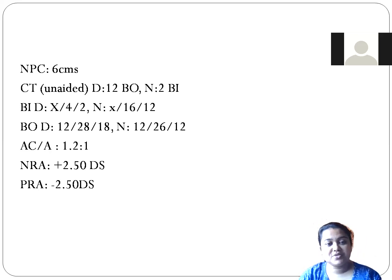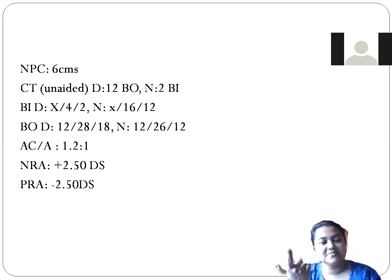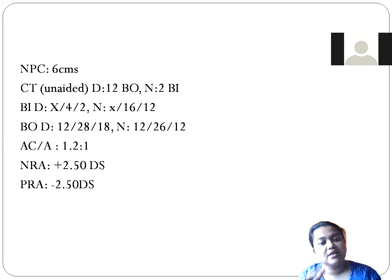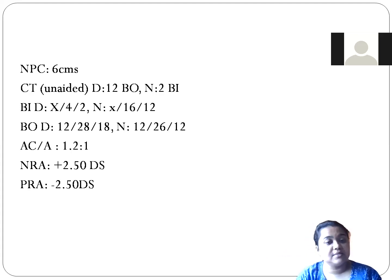This should trigger the diagnosis of divergence insufficiency, because the distance esophoria is much greater than the near deviation. At near, there is only a very small amount of exophoria. The NPC of 6 centimeters confirms that convergence is normal.